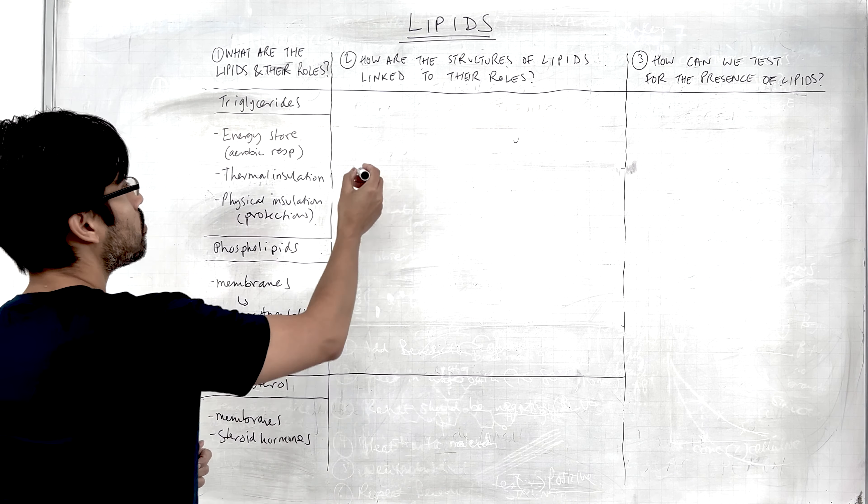Triglycerides also have other functions. They are thermal insulators — helping the organism to retain the heat generated by metabolic activities, keeping it in the body to keep that body temperature as close to optimum as possible. They also act as a physical insulator, providing protection for organs. Our fat stores are located around our organs, protecting them from impact damage.